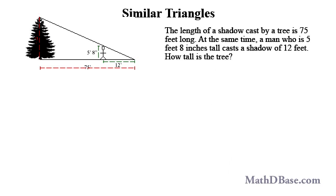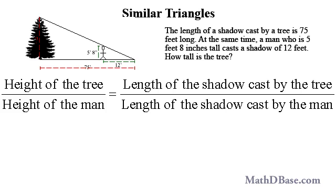We can set up a proportion using the relative heights of the tree and man, and the lengths of their respective shadows, using similar triangles. The ratio of the height of the tree to the height of the man is equal to the ratio of the length of the shadow cast by the tree to the length of the shadow cast by the man.